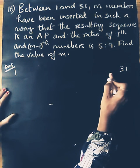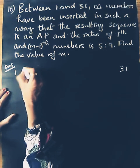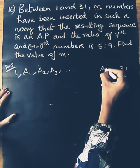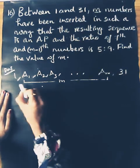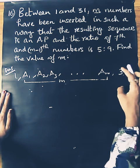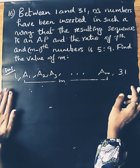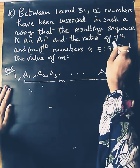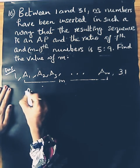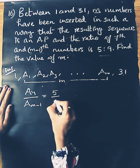We will insert M numbers — A1, A2, A3, and so on up to AM — between 1 and 31 to form an AP. The ratio condition given is A7 by A(M-1) is equal to 5 by 9.